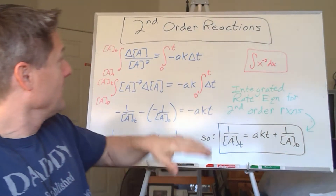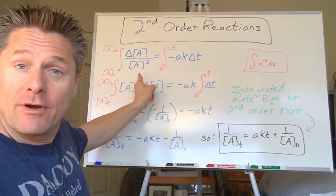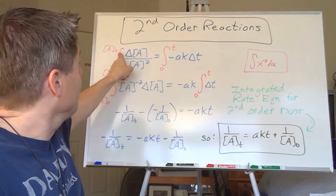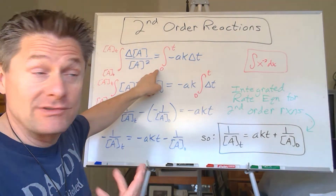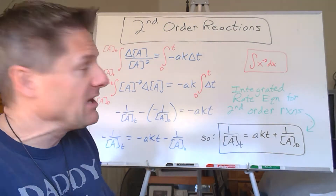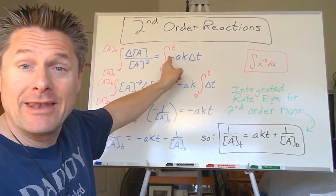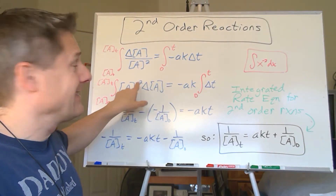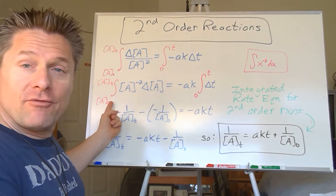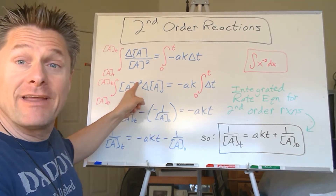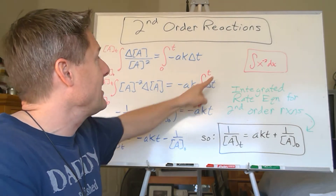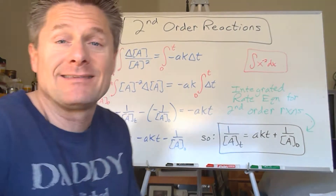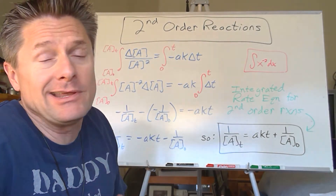How'd you do? I just rewrote that equation from the last board: dA over A squared equals negative aK dT. Do the integral from the initial concentration of A to the final concentration of A. Do the integral from time initial, which is zero, to time T. Pull out the constants — A, K, and the negative sign — outside the integral. You can write one over A squared as A to the negative two. So the integral from A-naught to A-final of A to the negative two dA equals negative aK times the integral from zero to T of dT. That last integral is just T.